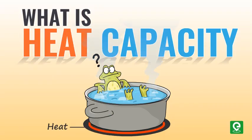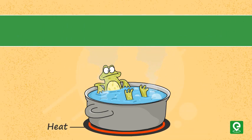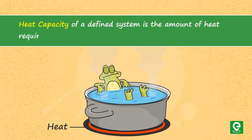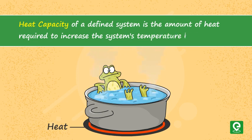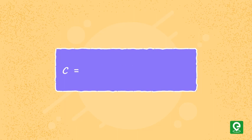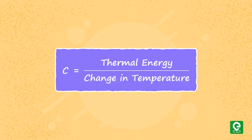Heat capacity of a defined system is the amount of heat required to increase the system's temperature by one degree. Heat capacity is expressed in the units of thermal energy per degree temperature.